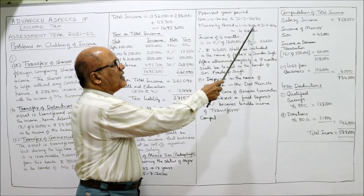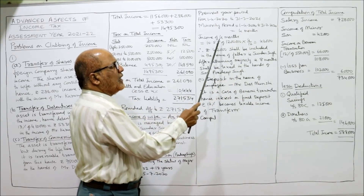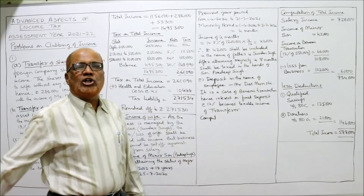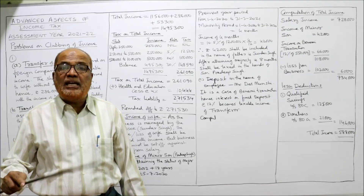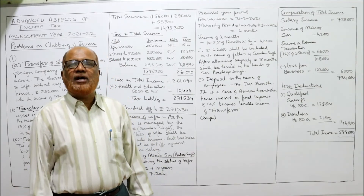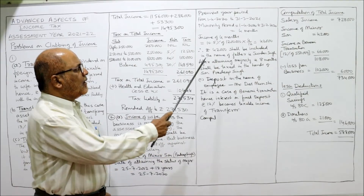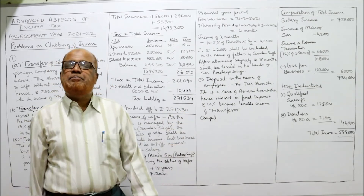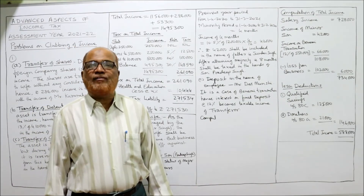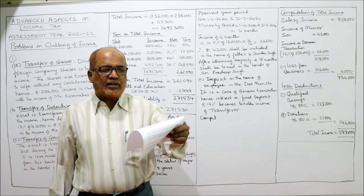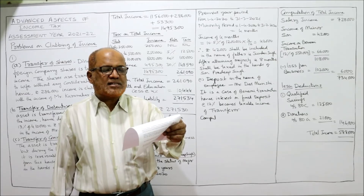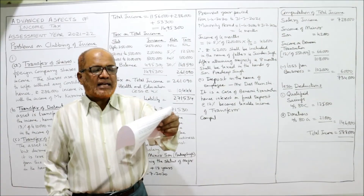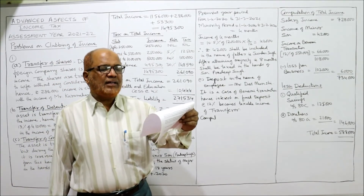The minority period is from 1st April 2020 to 31st July 2020 — four months. Income for four months: 10.5% of ₹12,00,000 × 4/12 = ₹42,000. This ₹42,000 will be included in the income of Surinder Singh. After attaining majority, the remaining eight months' income is taxable in the hands of son Pradeep Singh. Fourth point: qualified savings under section 80C and donations permitted at 100% under section 80G are deductions allowed from gross total income.